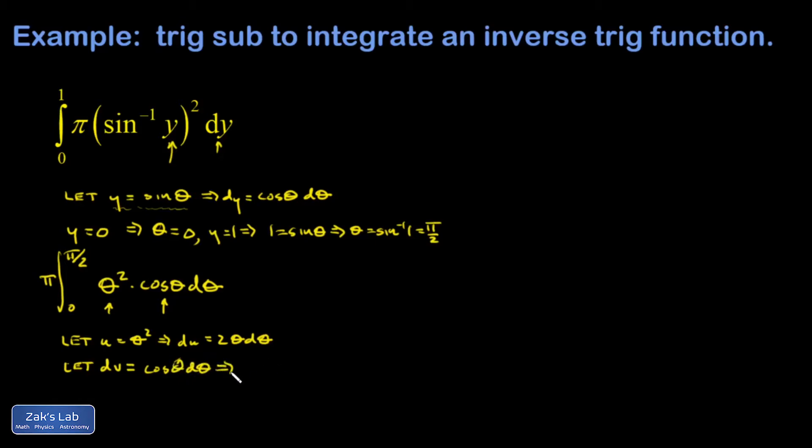That means v is sine theta. Now I can transform this integral with the first iteration of integration by parts. I can tell it's going to take another iteration to knock this down to a constant. I have pi out in front of the whole thing.